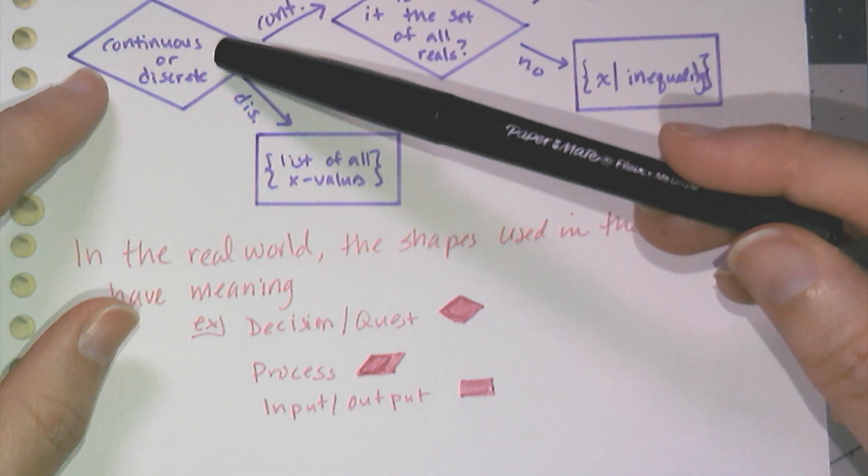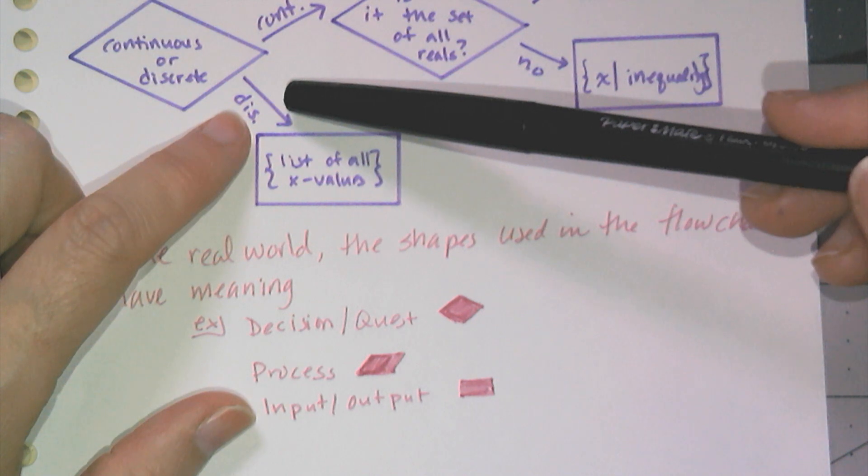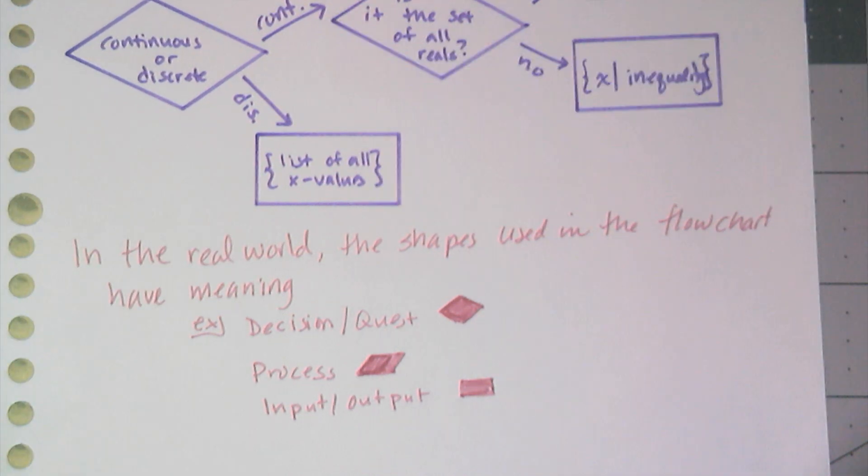So I had to make a decision. If this was the case, the answer to that decision, then this is my output, right? That's basically what a flowchart is.